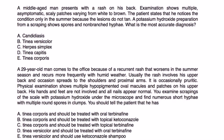Next question: a 29-year-old man comes to the office because of a recurrent rash that worsens in the summer season and recurs more frequently with humid weather. Usually the rash involves his upper back and occasionally spreads to the shoulders and proximal arms. It is occasionally pruritic. Physical exam shows multiple hypopigmented oval macules and patches on his upper back. Hands and feet are not involved and all nails appear normal. Scrapings examined with potassium hydroxide under the microscope reveal numerous short hyphae with multiple round spores in clumps.